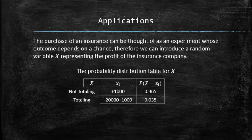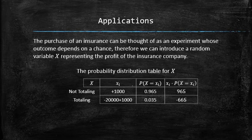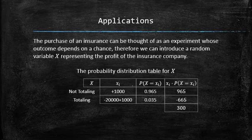We can now compute the expected value by adding another column on the right and computing the product of each possible value by its probability. The sum of the column is 300, and this is the value that we would call the expected value.